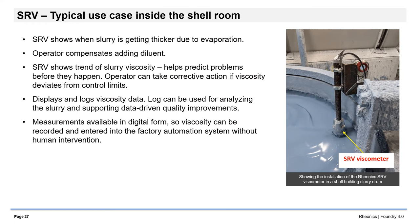Here is a typical use case of the Rhionics SRV viscometer inside the shell room. SRV shows when slurry is getting thicker due to evaporation. The operator compensates by adding diluent. SRV shows trends of slurry viscosity and helps predict problems before they happen. The operator can take corrective action when viscosity deviates from control limits. Because it is in the tank where the slurry is being mixed, its readings reflect the consistency of the actual material being applied to the shell. It displays and logs viscosity data, and the log can be used for analyzing the slurry and supporting data-driven quality improvements. Measurements are in digital form, so viscosity can be recorded and entered into the factory automation system without human intervention.